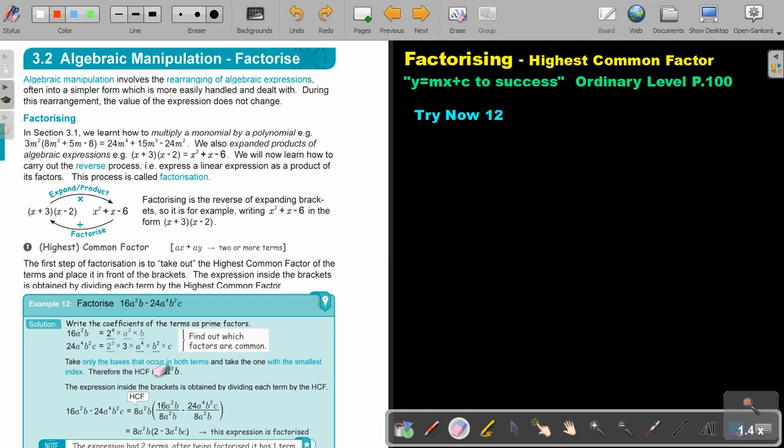So, take only the bases that occur in both terms and take the one with the smallest index. Therefore, if I look, there's 2s, yes. Is there 3s in both? No. Is there A in both? Yes. Is there B in both? Yes. So, I take the 2 but the smallest exponent. That will be 3. I take the A and the smallest exponent will be 2. I take the B and the smallest exponent will be 1.